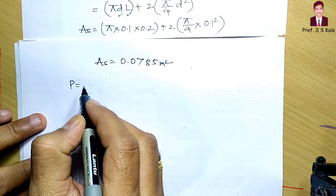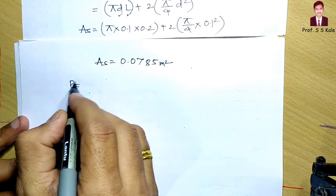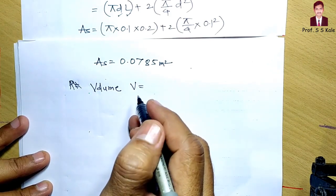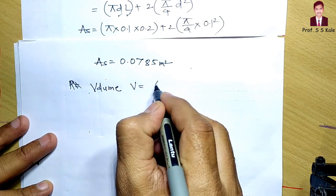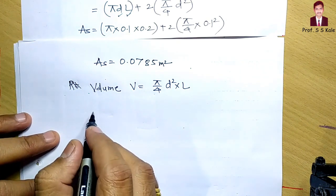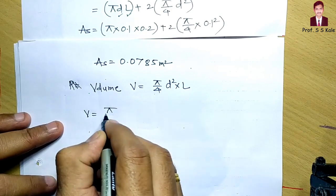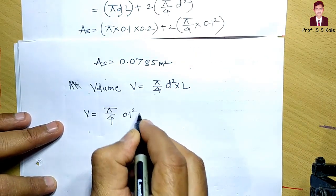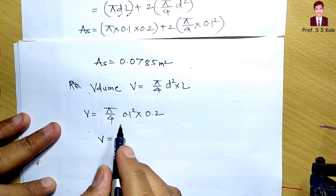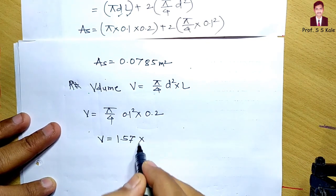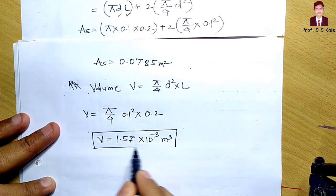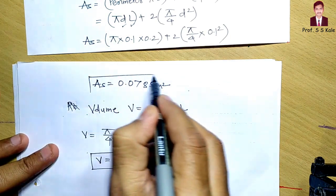Next, the volume of the cylinder is V = (π/4)·d²·L. Substituting d = 0.1 m and L = 0.2 m: V = (π/4)(0.1)²(0.2) = 1.57 × 10⁻³ m³. We have now determined both surface area As = 0.0785 m² and volume V = 1.57 × 10⁻³ m³.